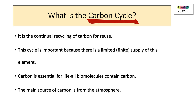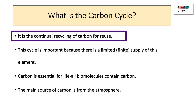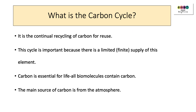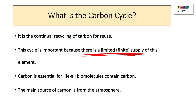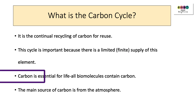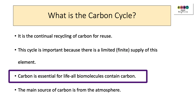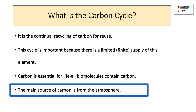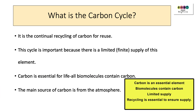What is the carbon cycle? It's the continual recycling of carbon for reuse. It's important to know why this is necessary. This cycle is important because there is a limited or finite supply of this element — there's only a certain amount of carbon, so it has to constantly be recycled. Carbon is essential for life; all biomolecules contain carbon. The main source of carbon is from the atmosphere, so because there's only a limited supply, it has to constantly be recycled.